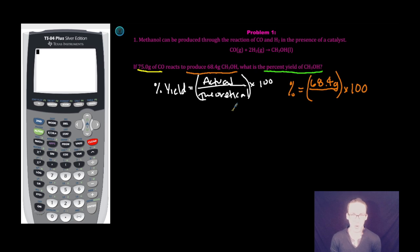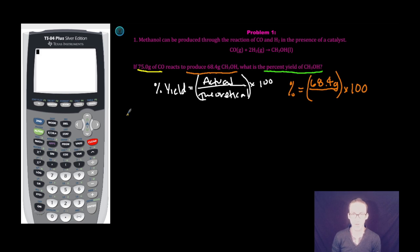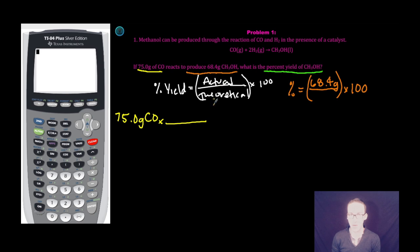We don't have to worry about leaving some of our reactants behind in a reactant vessel. We just want to know theoretically, if everything works perfectly, in a perfect world, how much methanol should we make? So if in a perfect world I had 75.0 grams of carbon monoxide, I want to know how many grams of CH₃OH in a perfect world I should get.